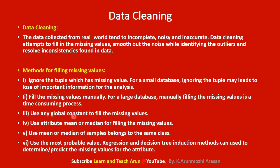The third method is to use any global constant to fill the missing values — for example, the infinite symbol, a hyphen, underscore, or similar symbol as a global constant. The fourth method is to use the attribute mean or median: calculate the average for one attribute, or calculate the median value for the attribute.